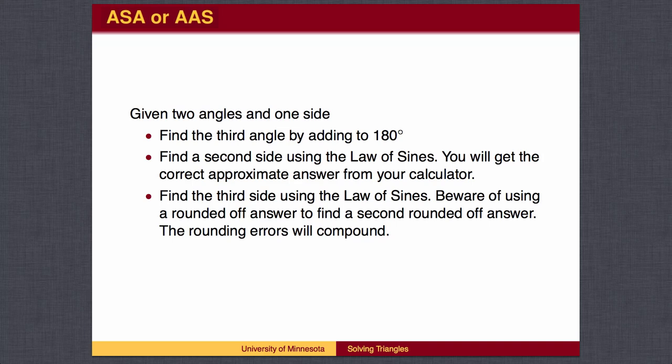When given two angles and one side, find the third angle, then use the Law of Sines to find the missing sides.